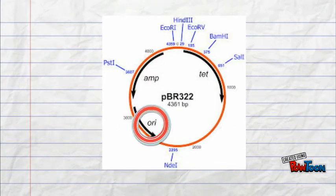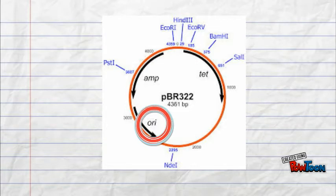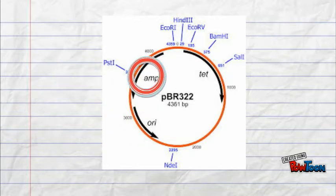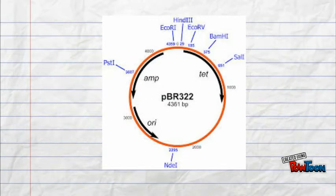The vector has its own origin of replication called the replicon that enables it to replicate inside the host organism. It has a selectable marker like ampicillin resistant gene, and multiple cloning sites for restriction enzymes.